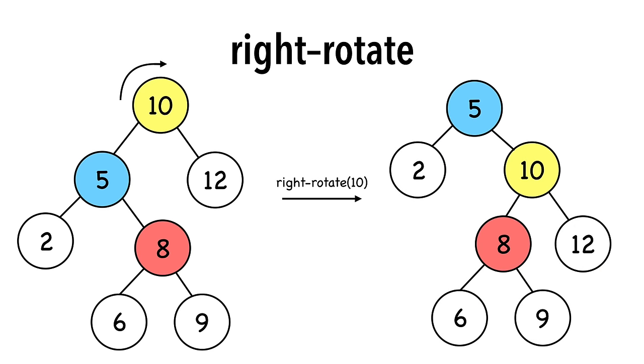Notice the properties of a binary search tree are still preserved. That is, smaller nodes are to the left, and larger nodes are to the right.